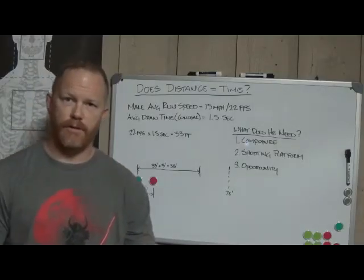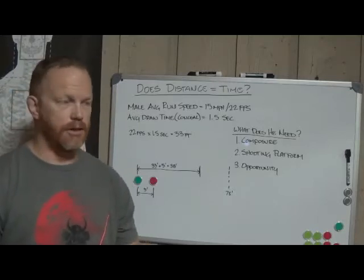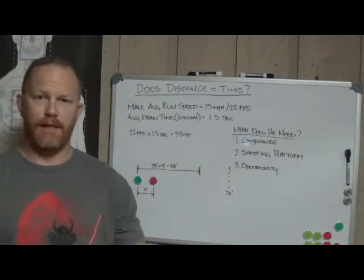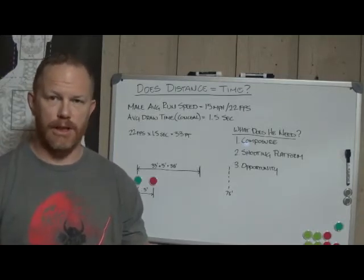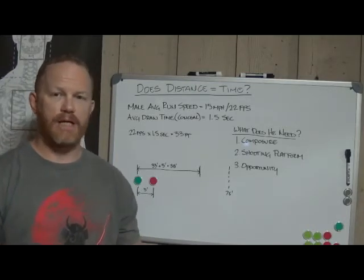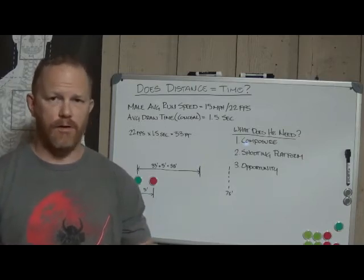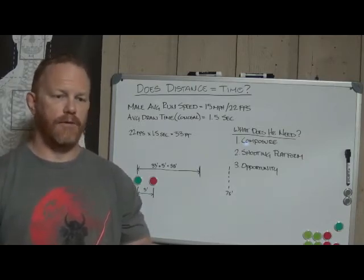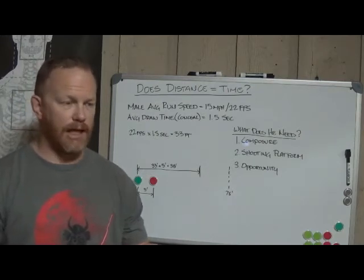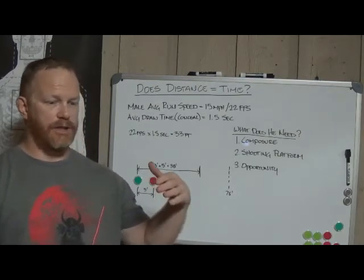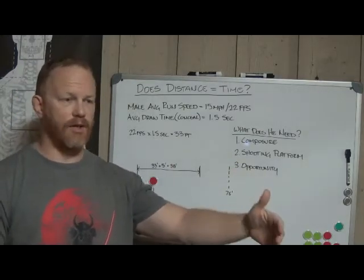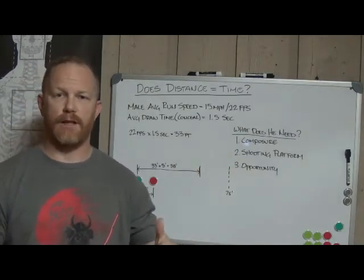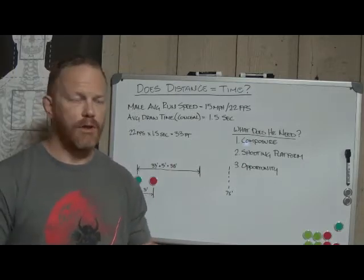All right guys, back to our series on strategy and methodology. One thing that I hear a lot of times is an old methodology called distance equals time. It's based on what you'll see in the law enforcement world a lot. If you've ever heard of the 21 foot rule, it's based on the idea that it would take an individual roughly a second to second and a half to cover 21 feet to be on you.